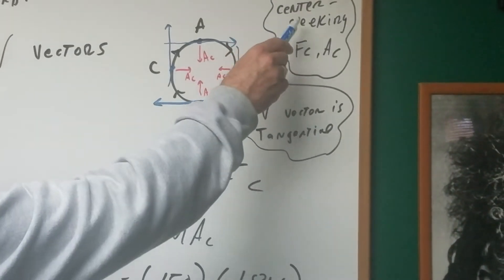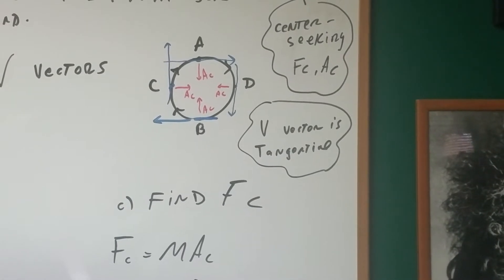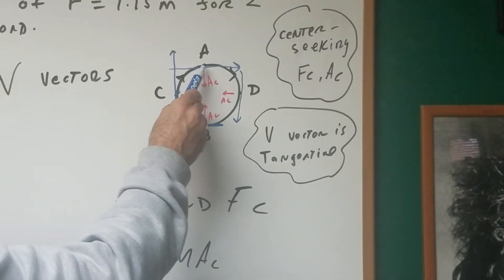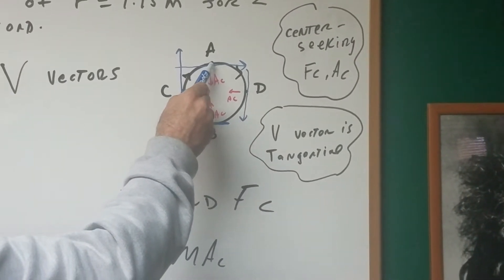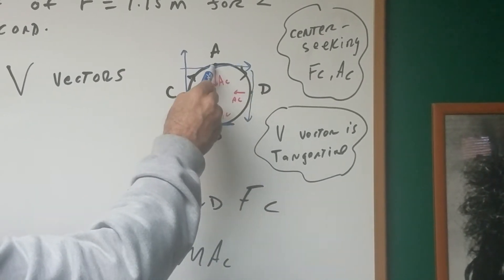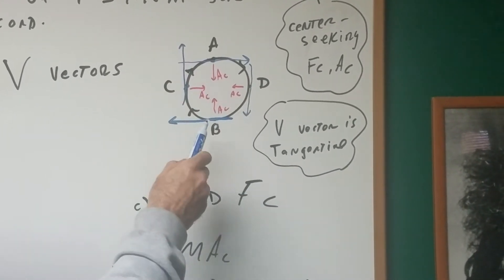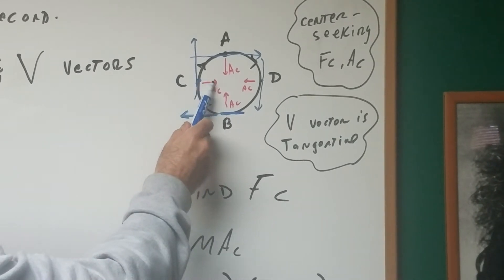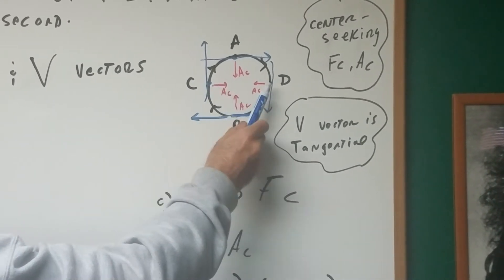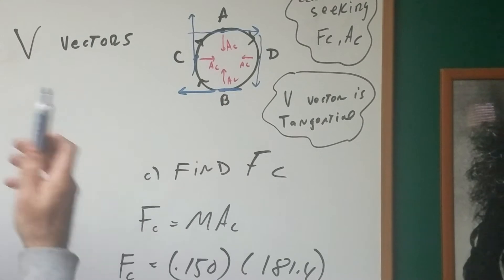Now, the force and acceleration are both center-seeking. So if you were at point A and I said, where is the acceleration or the force vector? It would be going downward towards the center. At B, it would be going upward. At C, it would be going to the right. And at D, it would be going to the left, center-seeking.